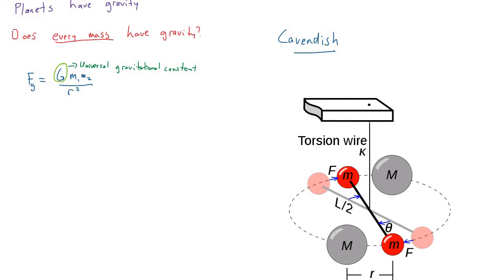So Newton already said, I think every single mass has gravity. And Cavendish went around to basically prove him like a good scientist would do. Is he right or is he not right? And so he set up this fancy system we've got here.